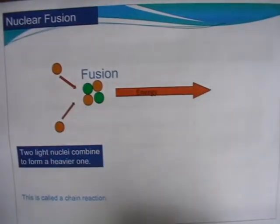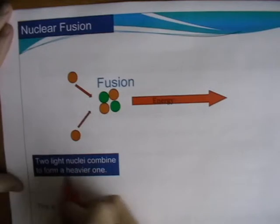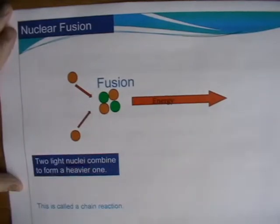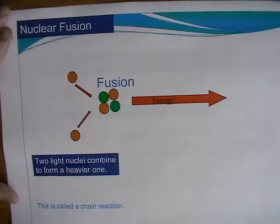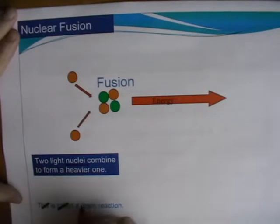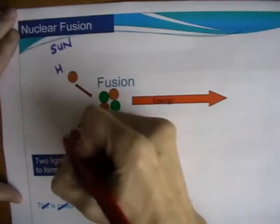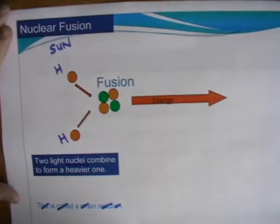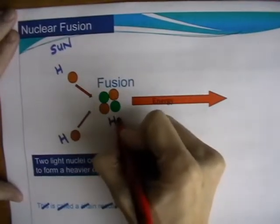Nuclear fusion, then, is the joining of two light nuclei. And again, it's nuclei you talk about rather than atoms. This is the sort of thing which happens in the sun. And when that happens in the sun, it's hydrogen and hydrogen which join together to form helium.